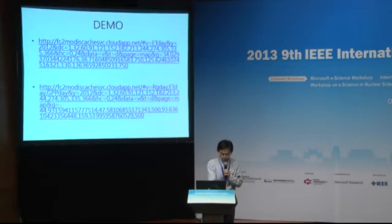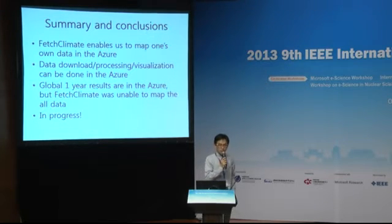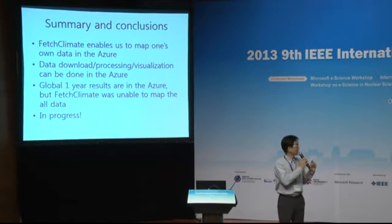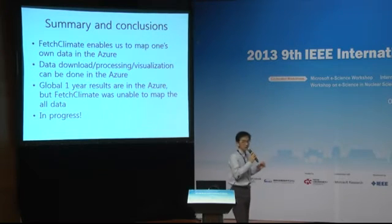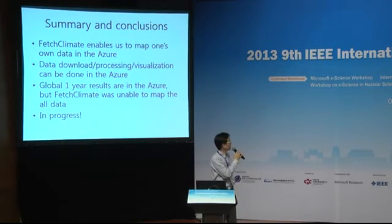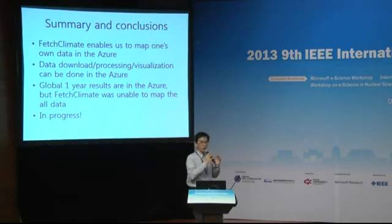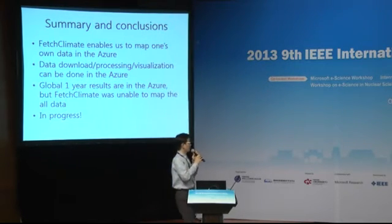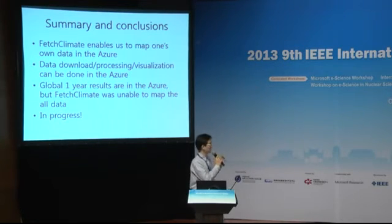The demo I was trying to show is not working, so I will skip it. In summary: FetchClimate enables us to map one's own data in Azure. Data download, processing, and visualization can all be done in Azure, and global one-year results are stored there. FetchClimate was unable to map the full global data, so we subsetted to regions like Korea and Mexico. The FetchClimate team is working very hard and it is still a work in progress.